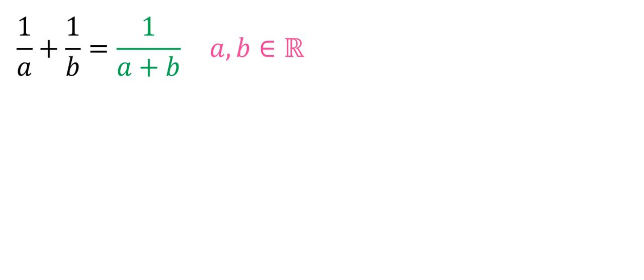So, in the first step, we use a common denominator for the left-hand side. It will be AB. B plus A equals right-hand side, 1 over A plus B.